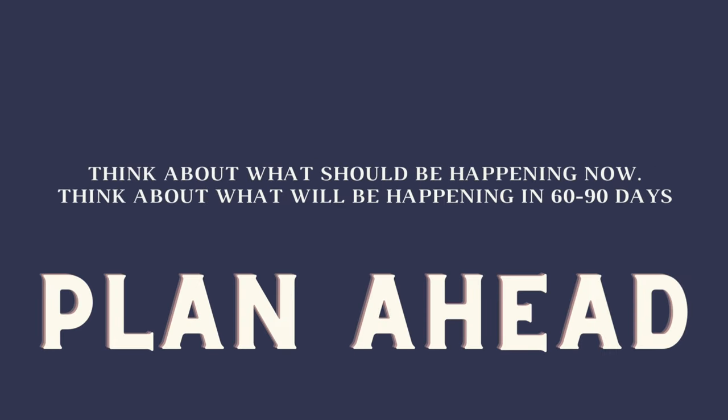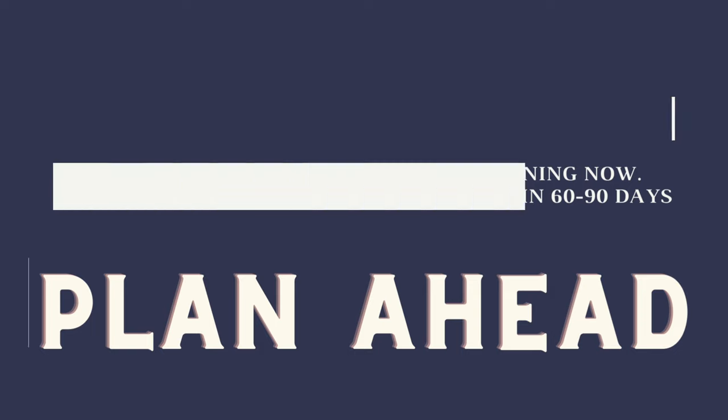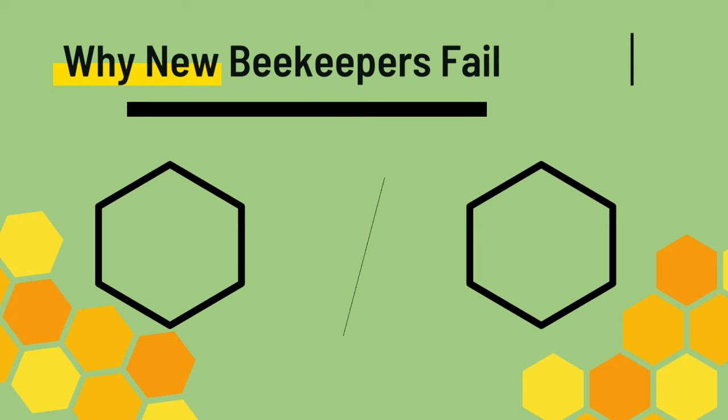The biggest advice we can give to you is learn to plan ahead instead of being reactive. Think about what should be happening now and plan for what should be happening in 60 or 90 days. Our good friend E.T. Ash has said that beekeeping is one of those endeavors which reinforces the idea that failure to plan means you should plan to fail.